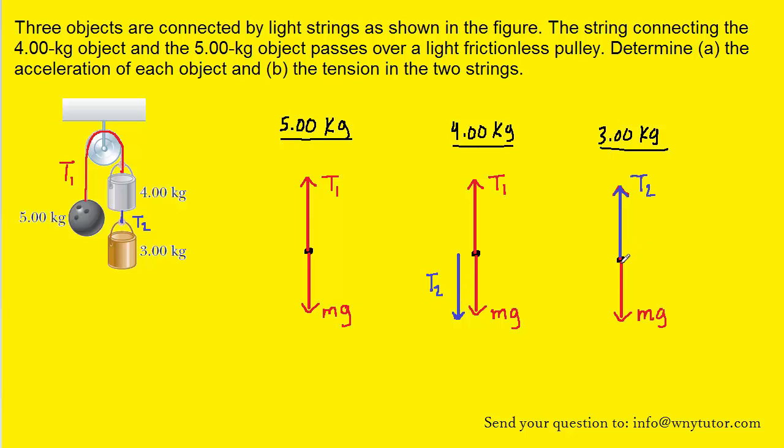The 3 kg object has a gravitational force acting downward, and then it has only one tension force T2 acting upward, and that's because that object is connected to only one of the ropes.